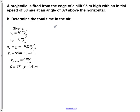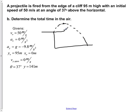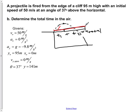Part B: determine the total time in the air. There are two ways to approach this. You can split the trip into two parts — T1 for the upward portion and T2 for the descent — and add them together to get T_total. Or you can solve for the entire trip at once, which is what we'll do here.